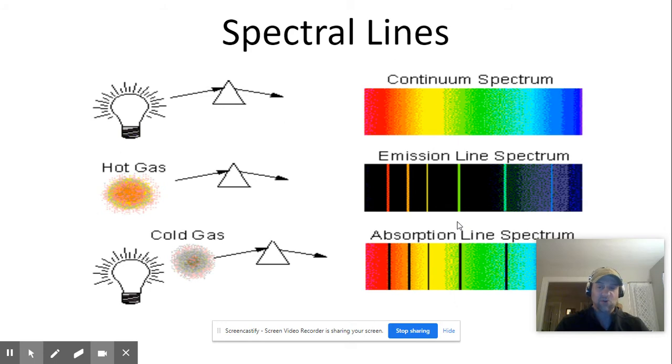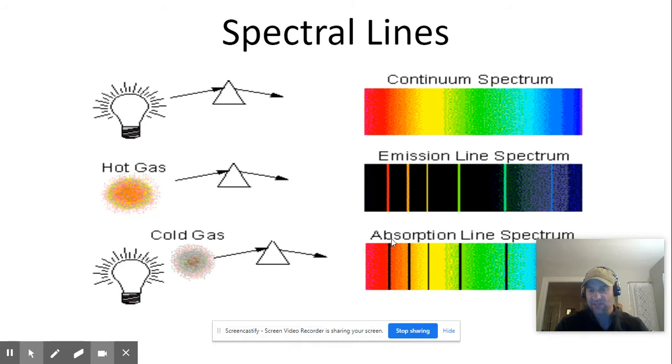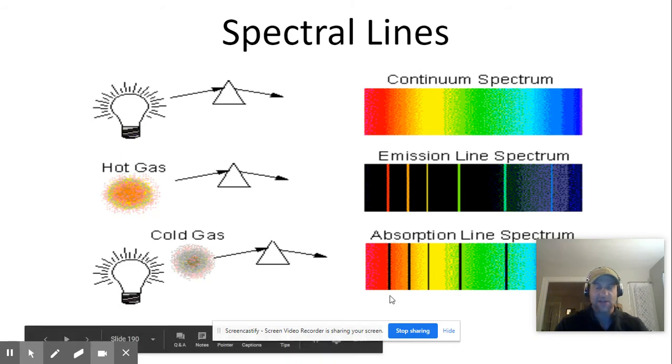There are emission lines and absorption lines. This is a continuous spectrum. The hot gas would only produce specific lines, emission lines, based upon what is in this gas. And then this is a light passing through cold gas. The gas is absorbing some wavelengths, and that results in blank spots in the spectrum, the absorption lines.